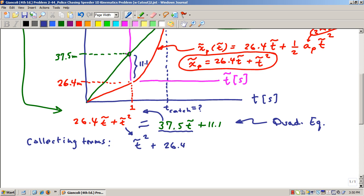So I'm going to get 26.4 from this term minus the 37.5 from that other term on the right times T-tilde. And then I'm going to finally bring that term over to the left. So it's going to be minus 11.1 which all of that is equal to zero.